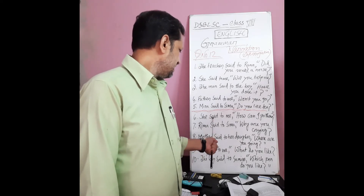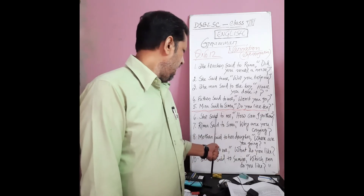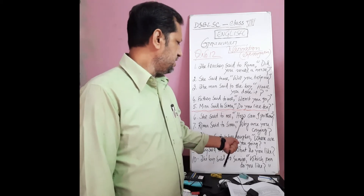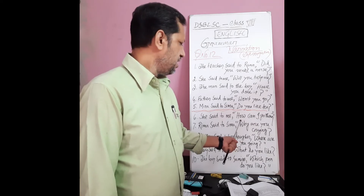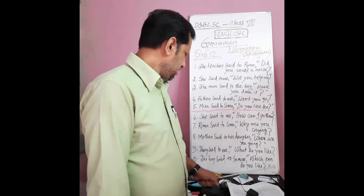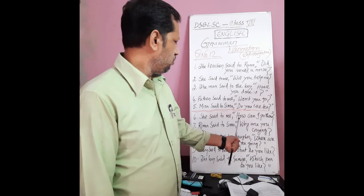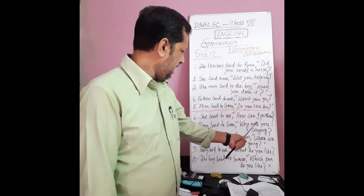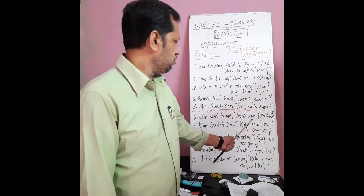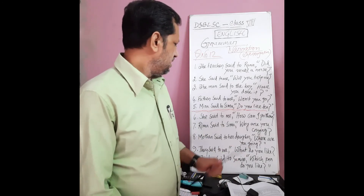She said to me, 'How can I go there?' So, according to the rule, she asked me. 'How' is the WH-word, so I use 'how' at the place of the comma and inverted comma. 'Can' turns into 'could.' So: 'She asked me how I could go there.'